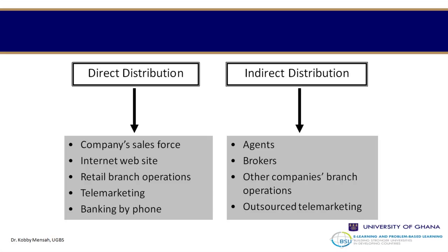We also have indirect distribution, where distribution can take place through agents, brokers, other companies, and branch operations. For example, insurance can be distributed through a bank — the insurance company may have a partnership arrangement or collaboration with a bank, and the bank goes ahead to distribute that product. We also have travel and tour operators, who are not financial services institutions but still sell travel insurance, content insurance, and things like that to customers as third parties. There is also outsourced telemarketing, where companies outsource what is not their core competency, concentrating on what they do best.